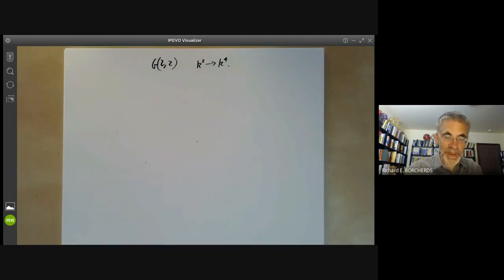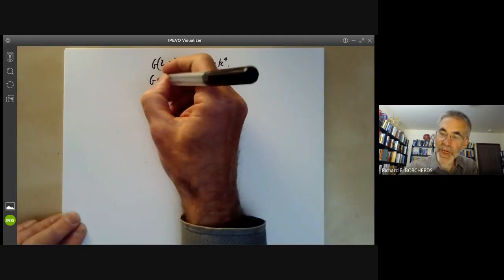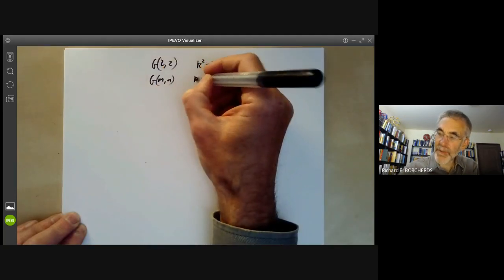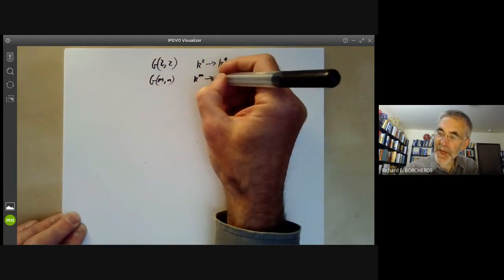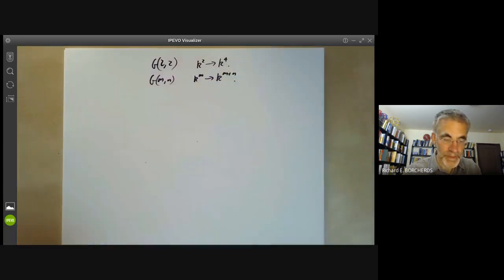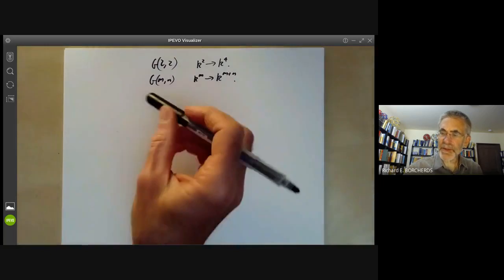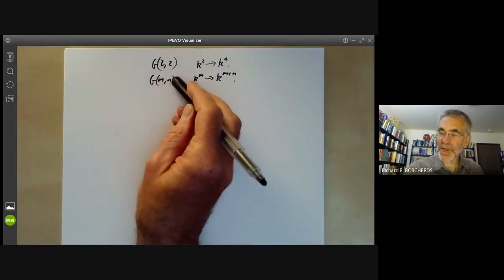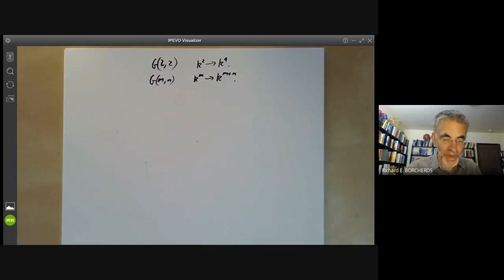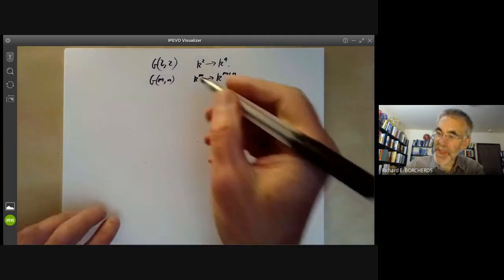Now we're going to say a little bit about more general Grassmannians GMN, which are injective maps from K^M to K^(M+N). Much of the theory of Grassmannians GMN looks like the theory of Grassmannians G22, only there's more bookkeeping going on.